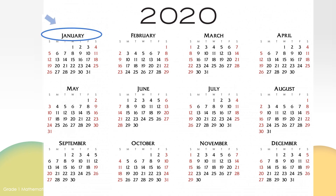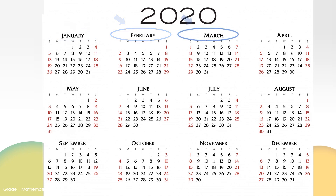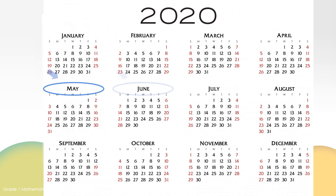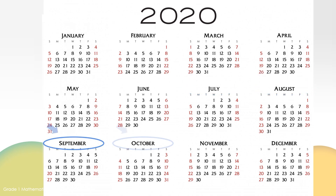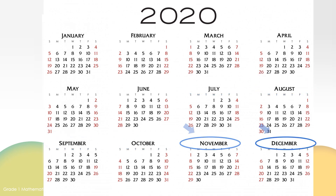January, February, March, April, May, June, July, August, September, October, November, December.